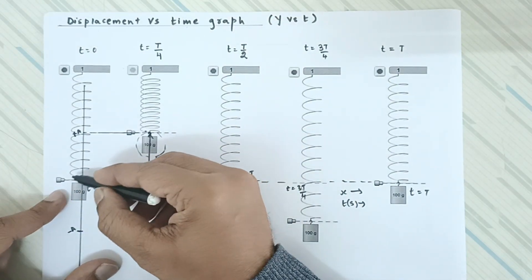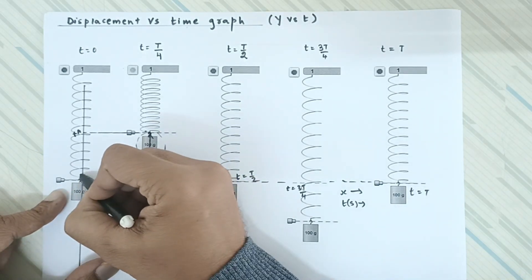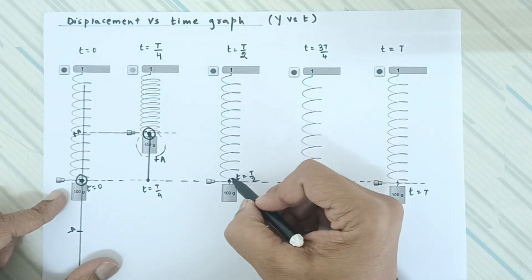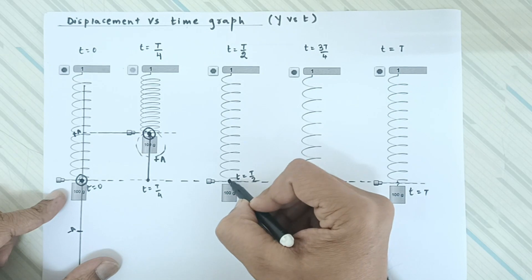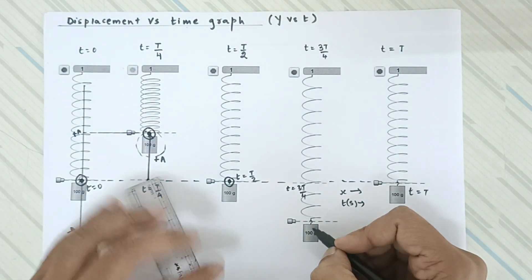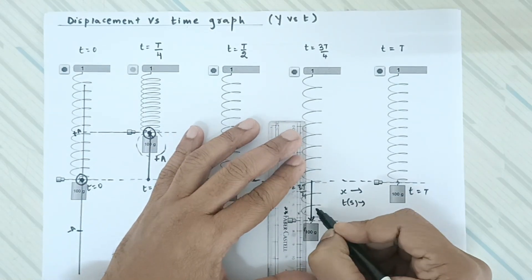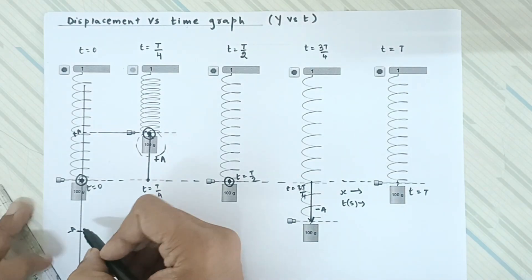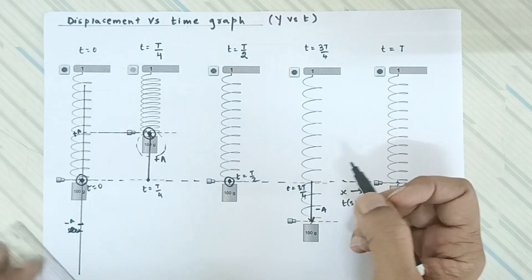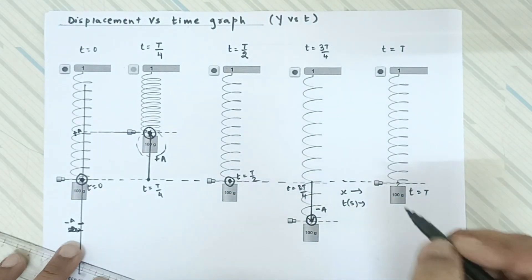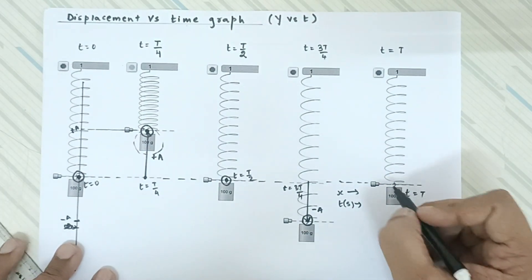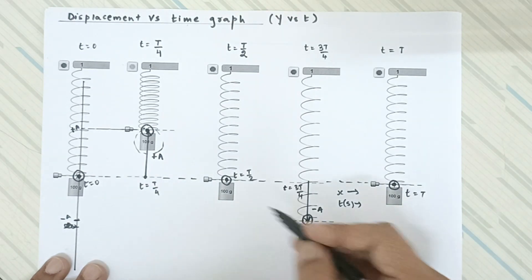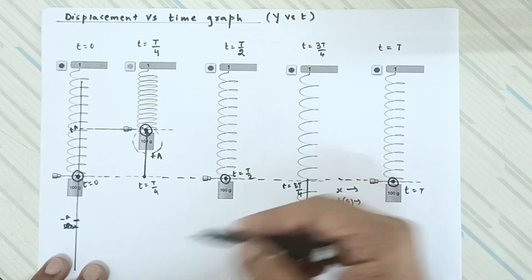At t = 0 the spring-mass system is at the mean position, so displacement is 0. At t = T/4 displacement is +a. At t = T/2 displacement is 0 because the object is again at mean position. At t = 3T/4 the hook is at -a, below the mean position. At t = T it returns to the mean position, so displacement is again 0. So at t = 0, T/2, and T the displacements are 0, and at T/4 and 3T/4 they are maximum in the positive and negative directions respectively.